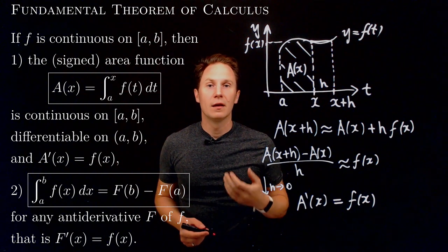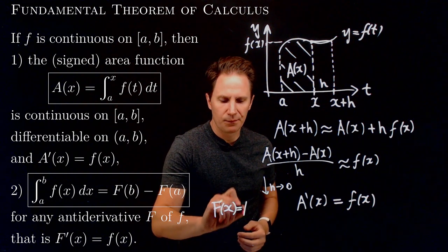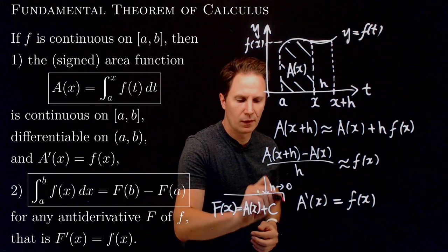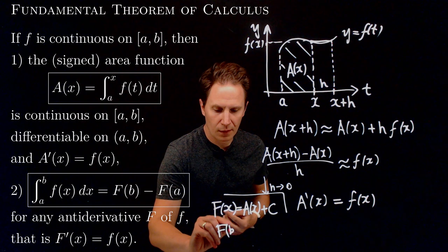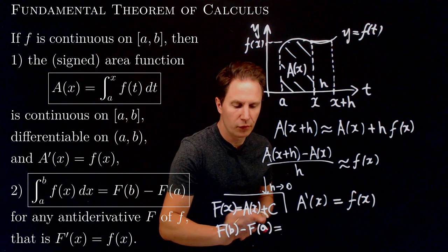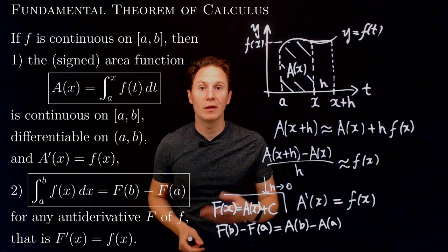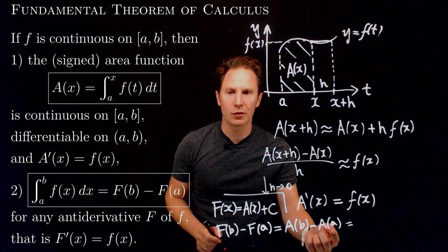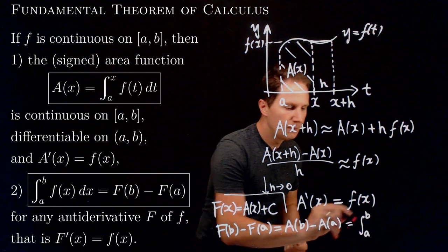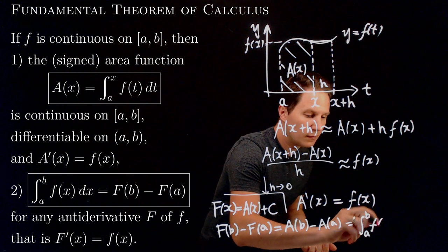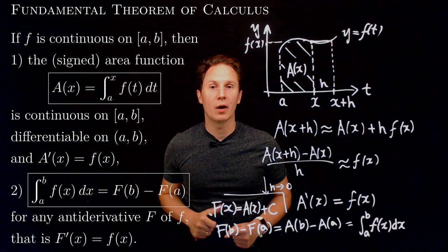Combined with the fact that antiderivatives can only differ by a constant, that means capital F of x must be A of x plus some constant C. So then the right-hand side — this difference of endpoint values for capital F — is simply the difference of endpoint values for A of x plus C. The plus C cancels in this difference, and we are left with A of B minus capital A of little a. But capital A of little a is the definite integral from a to a, which is zero, so we are only left with the first term: the definite integral from A to B of f of t dt. That symbol t could be replaced by x, and we obtain the statement of the second part of the fundamental theorem of calculus.